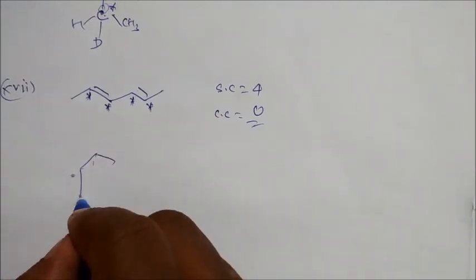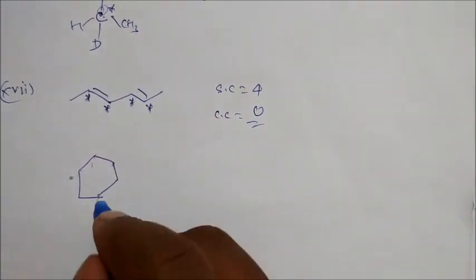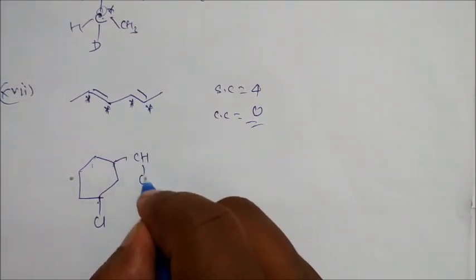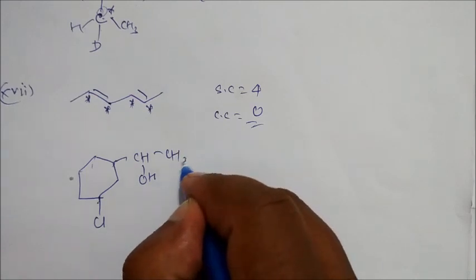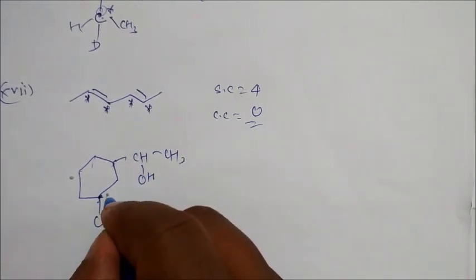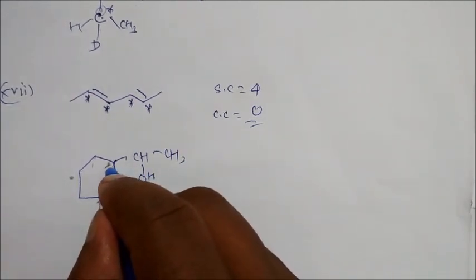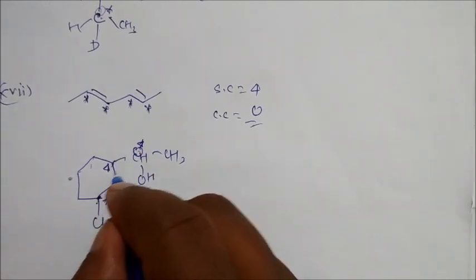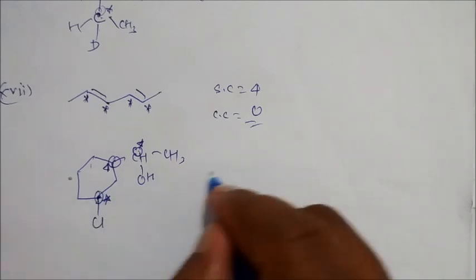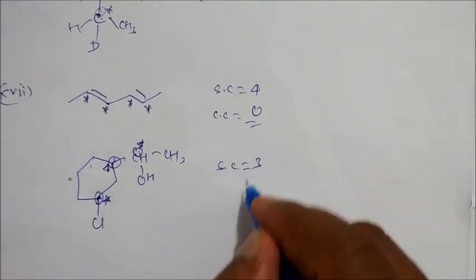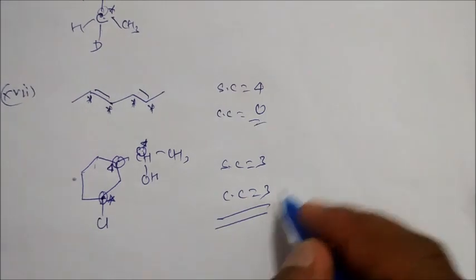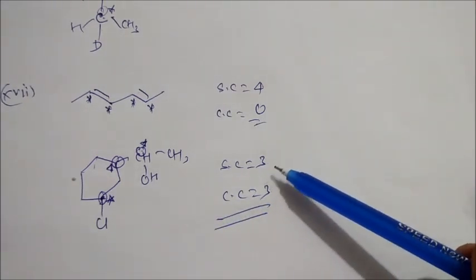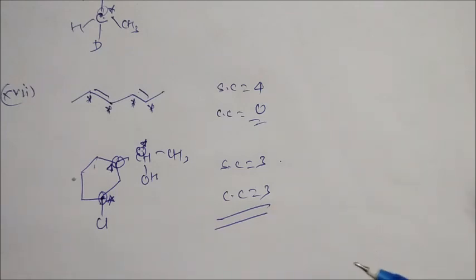Let us take the next example. Suppose this is the ring structure attached with Cl, and this is attached with CH, and here is OH and CCl3. So very clearly: this is a stereocenter — yes. This is a stereocenter — yes. This is a stereocenter — yes. This is also a chiral center, this is also chiral, this is also chiral. So we can say stereocenters is three and chiral center is also three. I hope with these examples you have understood how to find stereocenters and chiral centers respectively.